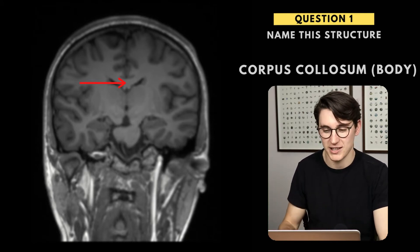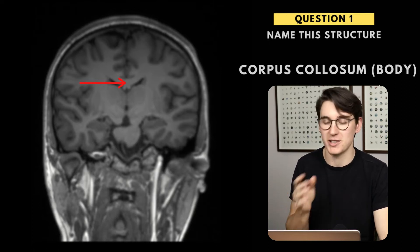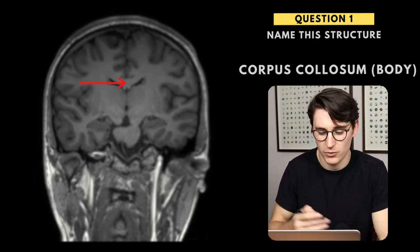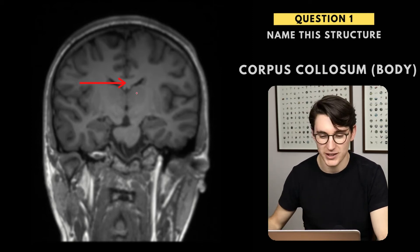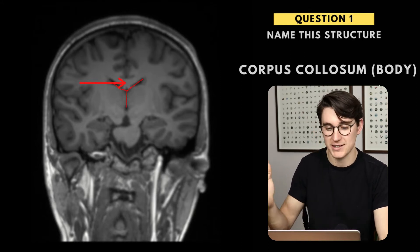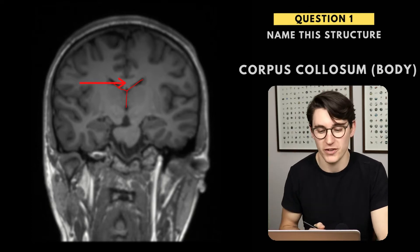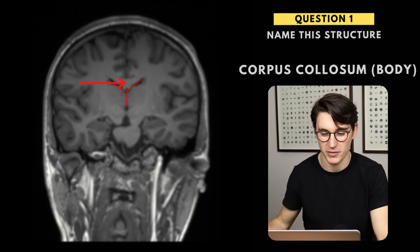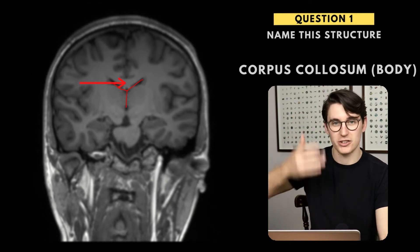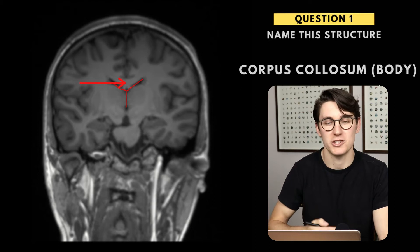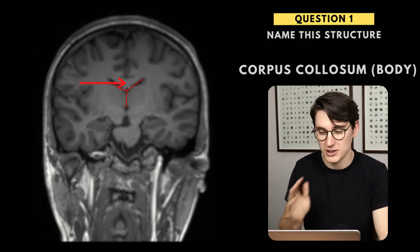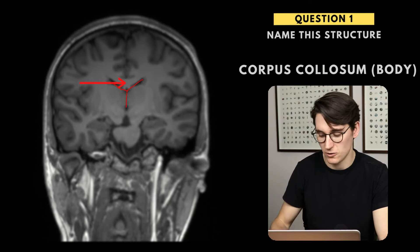This is the corpus callosum, more specifically the body of the corpus callosum. Looking at this image, we've got a coronal slice, a T1 weighted MRI, and we can see our lateral ventricles as well as, just faintly, the interventricular foramen that connects the lateral ventricles to the third ventricle. Another name for that is the foramen of Monroe. So we know we're in the central region of this coronal slice, and we can assume that where we're cutting this corpus callosum is in fact the body of the corpus callosum.